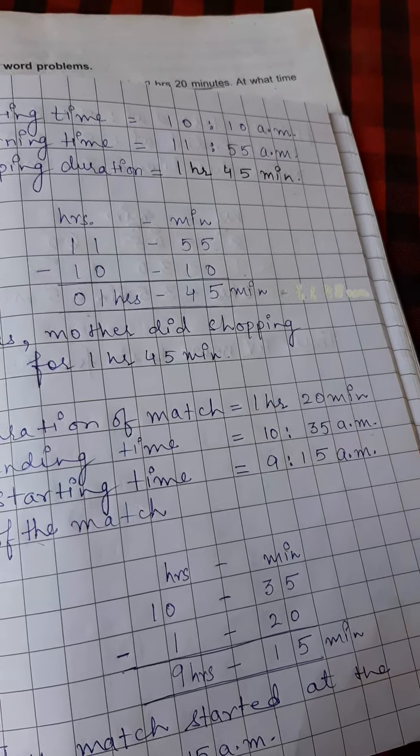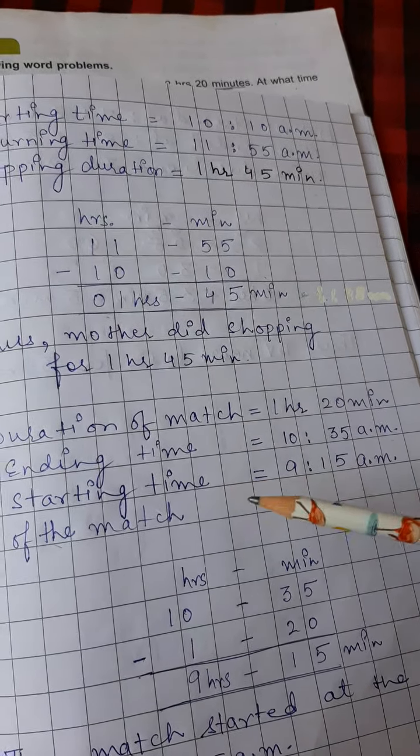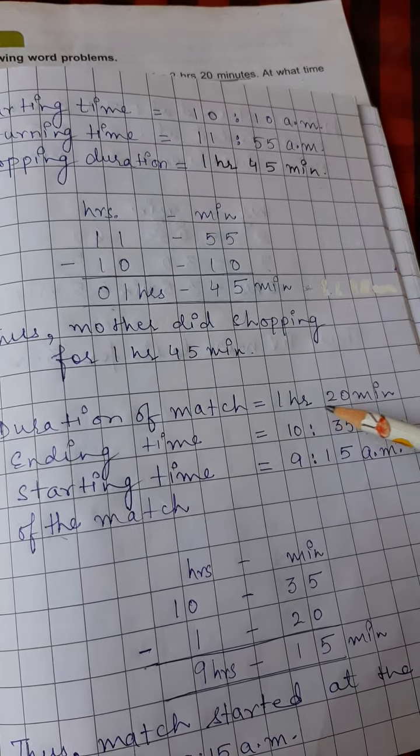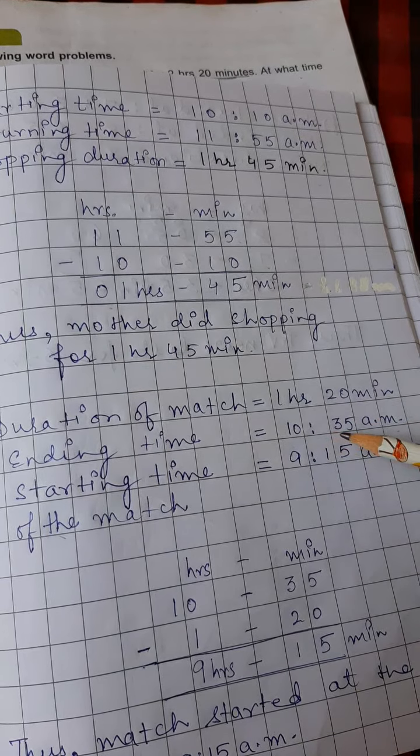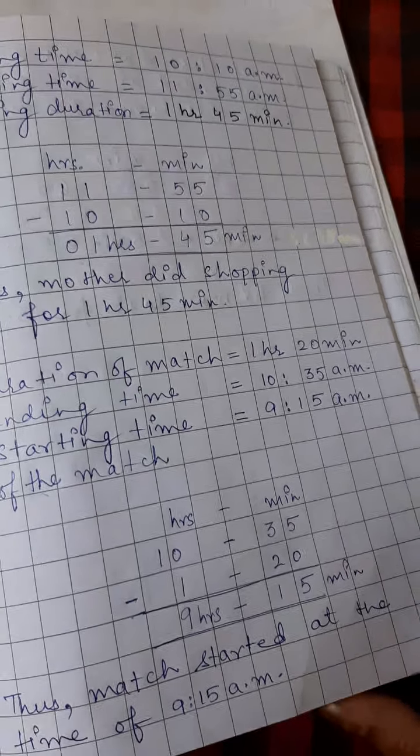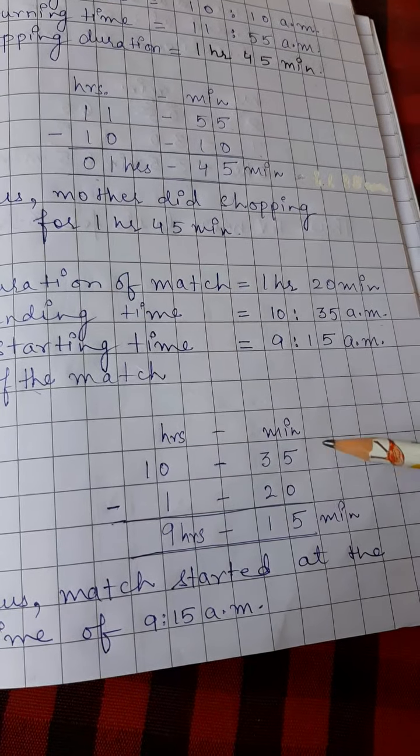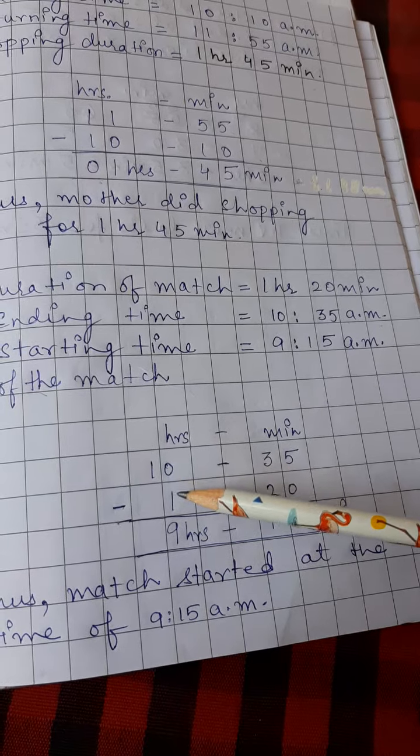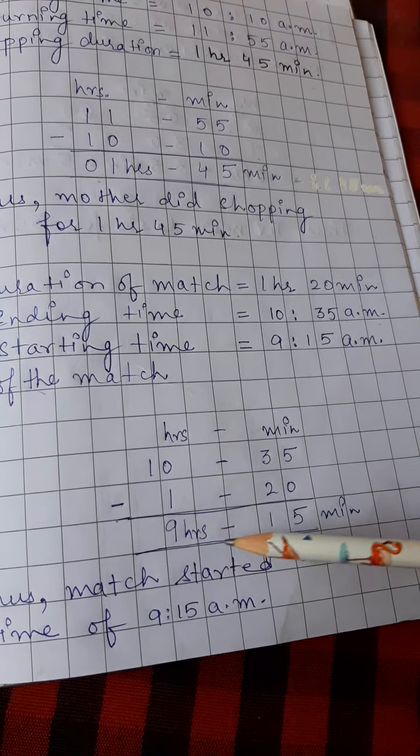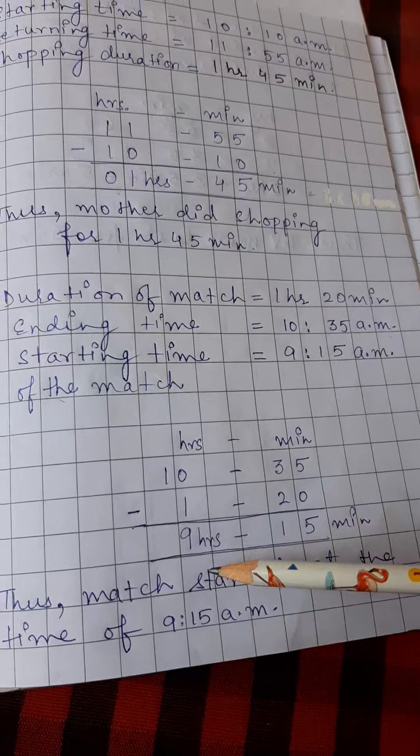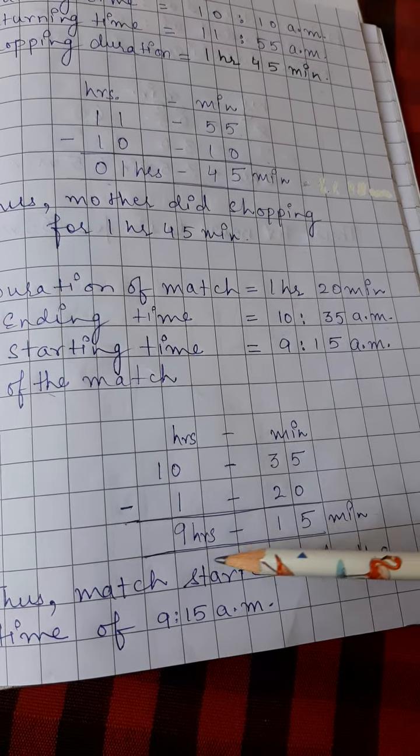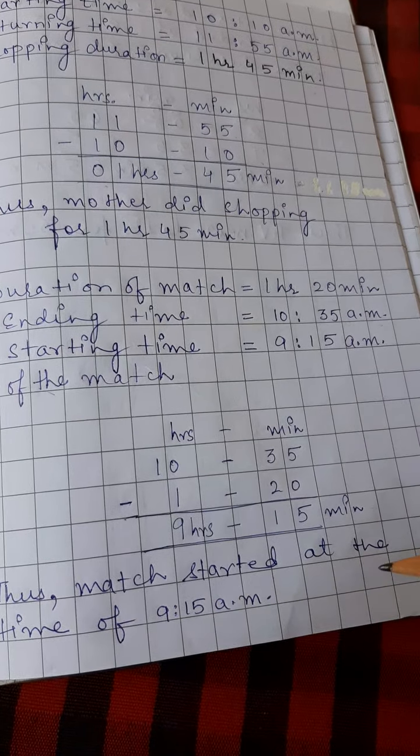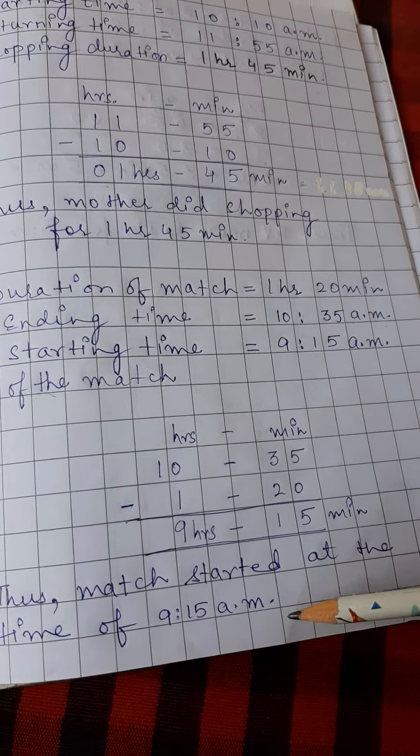Now to find out the starting time, we have to subtract. We have to subtract what? We have to subtract 1 hour, 20 minutes from 10 hours, 35 minutes. So, make the columns like this and 5 minus 0 is 5, 3 minus 2 is 1, 10 minus 1 is 9. So, 9 hours, 15 minutes. That means, the match started at 9.15am. So, thus, match started at the time of 9.15am.